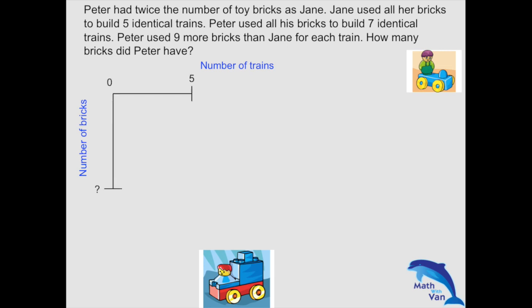So we know that for Jane's case, she could build 5 trains, but we do not know the number of bricks she used per train. It doesn't matter. But what we do know is that this area represented here by the black and purple line is actually the total number of bricks used by Jane.